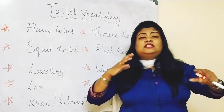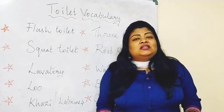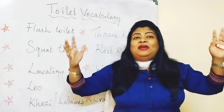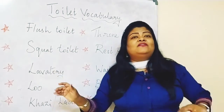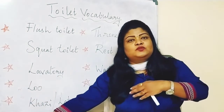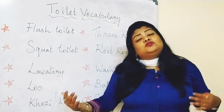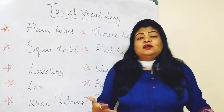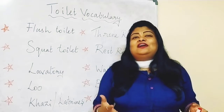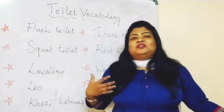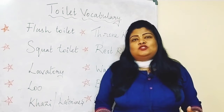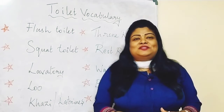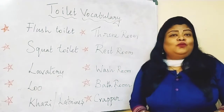The last words in this group are kazi and latrines. These two words are used mostly among military people. In military camps, toilets are built in blocks with many units — those are called kazis. Latrines is another name for the same thing. So latrines and kazi are nothing but toilet rooms for military people. Don't get confused if someone from the army talks about kazi or latrines — they are simply discussing their washrooms.